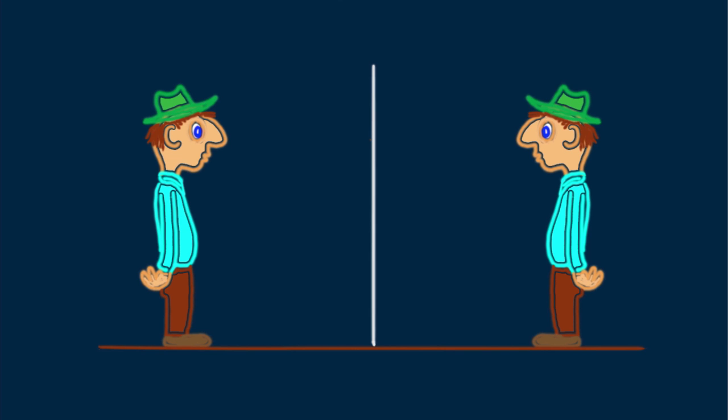This brings up an interesting question: what is the minimum height for the mirror to show Blinky Bill's full-height image? Blinky Bill is in an illuminated room, so zillions of light rays reflect from all points on his body. We'll focus our attention only on rays reflecting from his shoes, then from his hat. Of the zillions of rays reflecting from his shoes, we'll consider only one — the green ray that gets to the mirror and then reflects to his eye. This ray meets the mirror halfway between Blinky's eye and his feet.